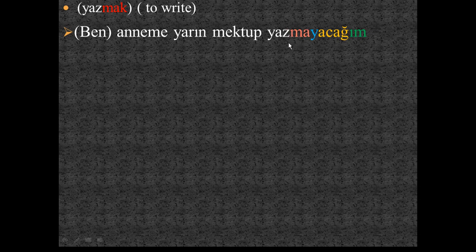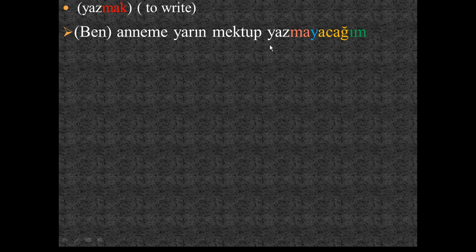The last vowel 'a' belongs to the first group — 'a, ı, o, u' — so it requires negative suffix 'ma,' followed by buffer 'y,' then future tense suffix 'acak,' then personal suffix 'ım' for first person singular. The full sentence: 'Ben anneme yarın mektup yazmayacağım' — I will not write a letter to my mom tomorrow.